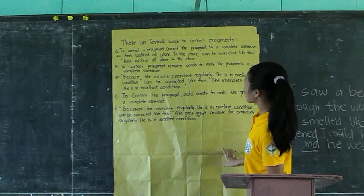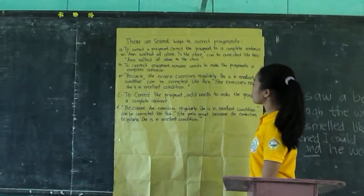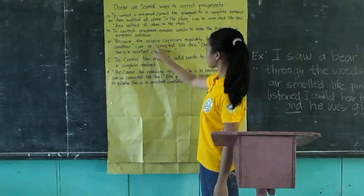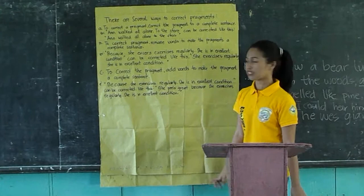Letter B: correct fragments by removing words to make the fragment a complete sentence. Example: 'Because she exercised regularly, she's in excellent condition' can be corrected like this — 'She exercised regularly, she's in excellent condition.'